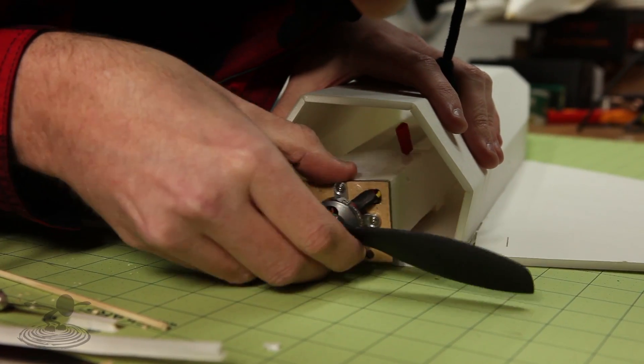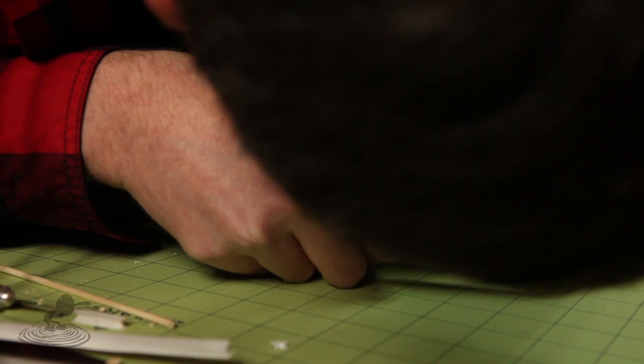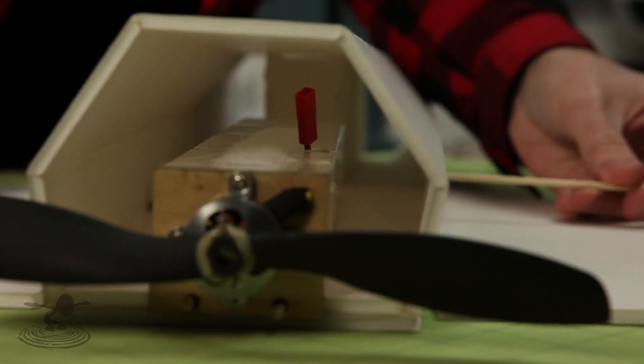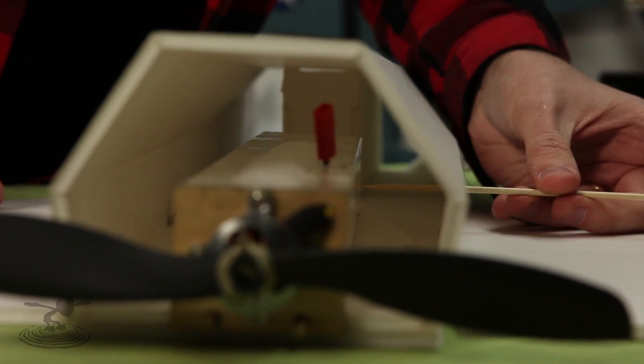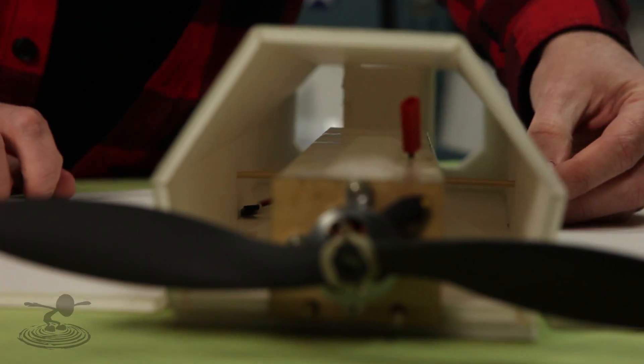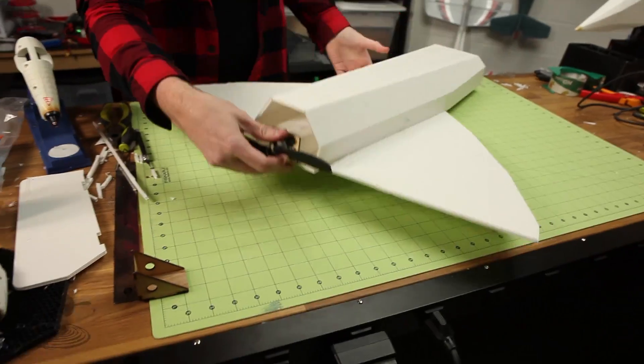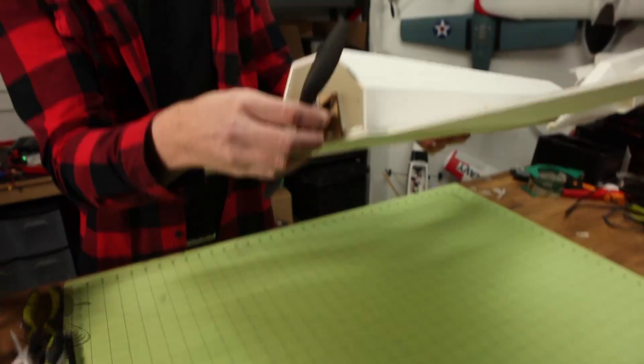Now we're gonna test fit the power pod again. Make sure that everything lines up. Take your barbecue skewer and secure it in place. Now that's really on there.